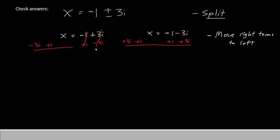Everything that's on the right side will cancel out, and so here's what we're left with. On the left, we have X plus 1 minus 3i. For our second solution, we have X plus 1 plus 3i.